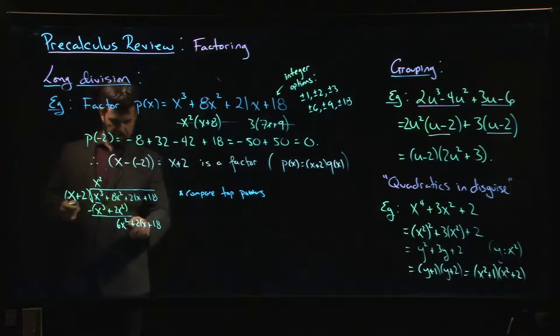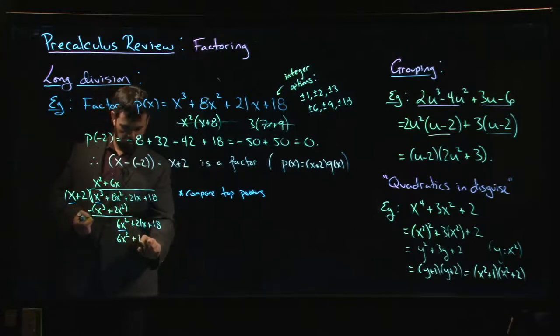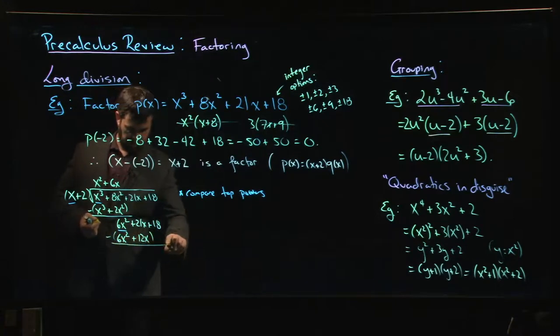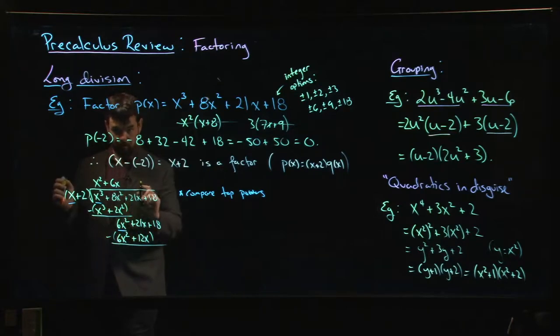So now the top power that I have is 6x squared. Let's say, what do I have to multiply x by to get 6x squared? Well, I'll have to multiply by 6. That gives me 6x. But I also have to multiply by another x. So x times 6x gives me 6x squared. So I need 6x. So now I take 6x and multiply by x plus 2. So 6x times x gives me that 6x squared. 6x times 2, 12x. And again, I'm going to subtract. So I subtract. 6x squared minus 6x squared cancels. It gives me 0 as I expect.